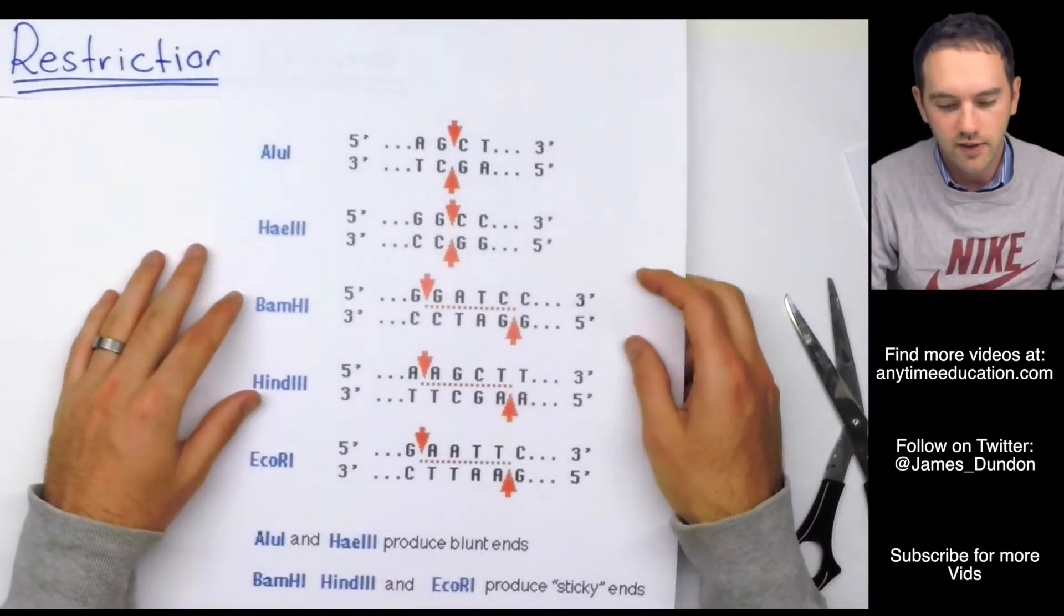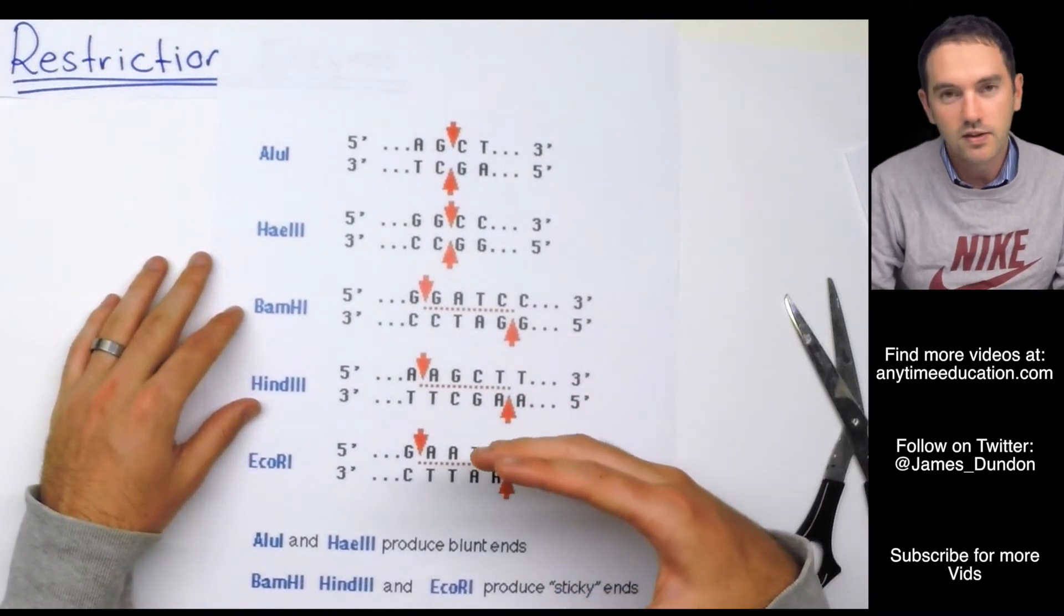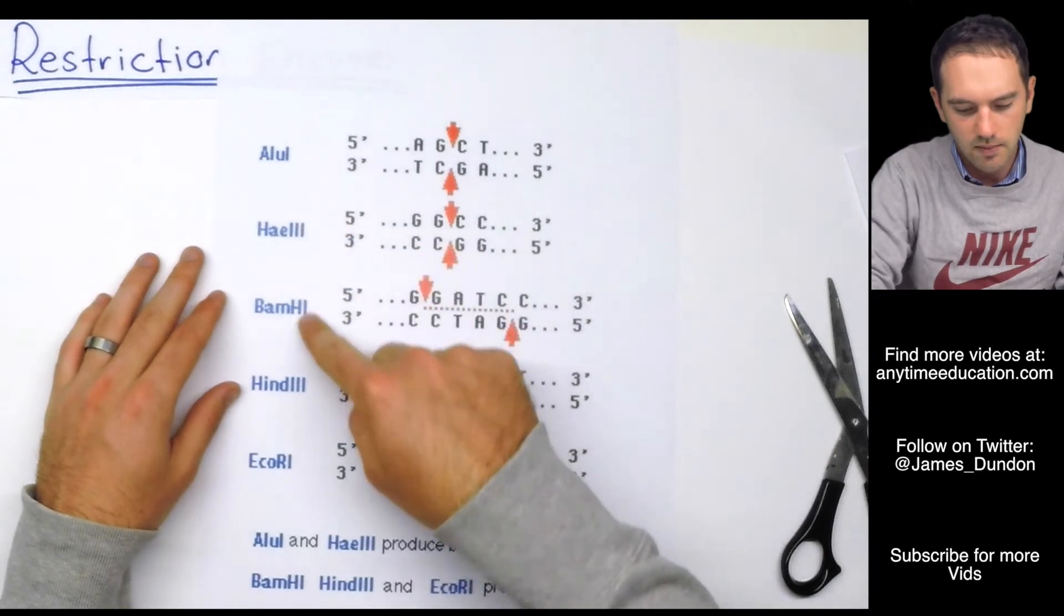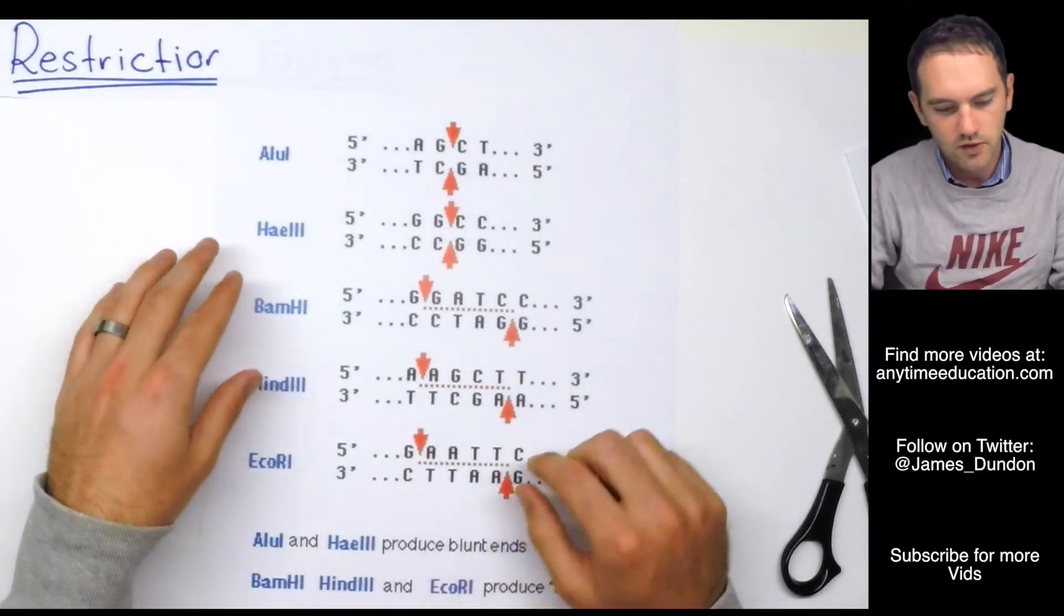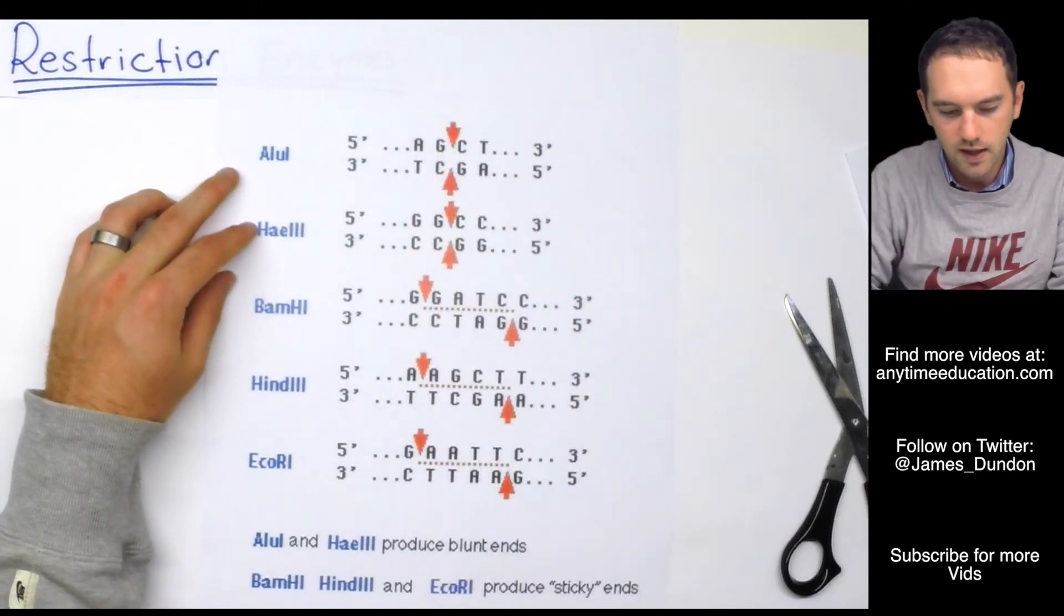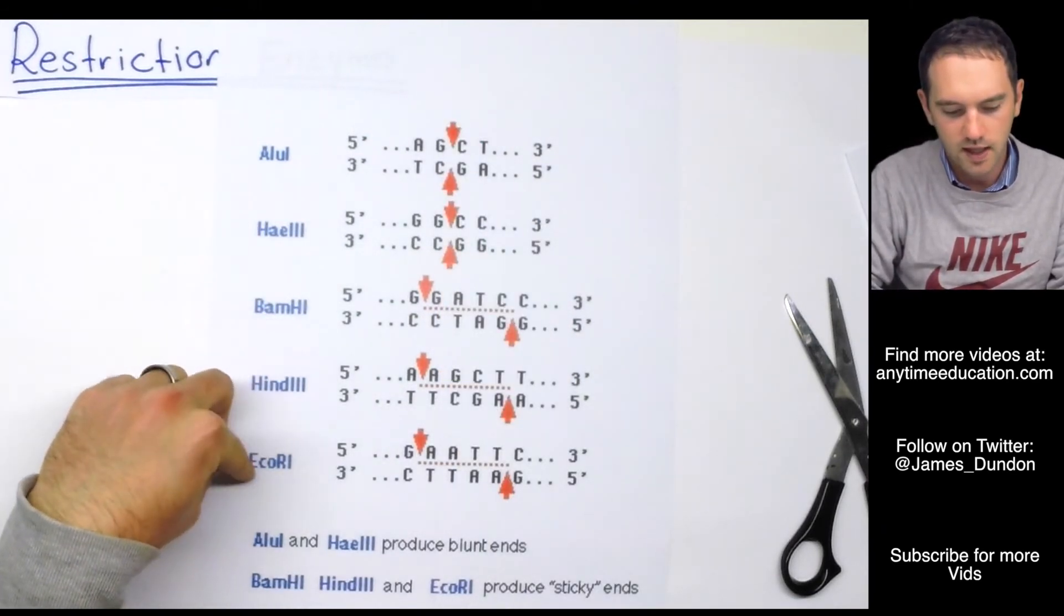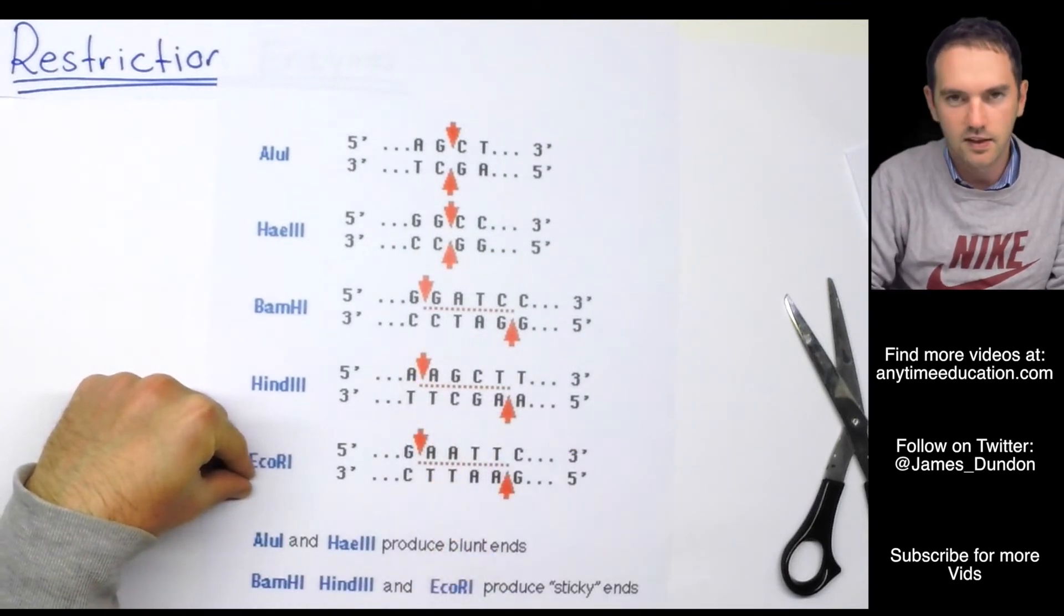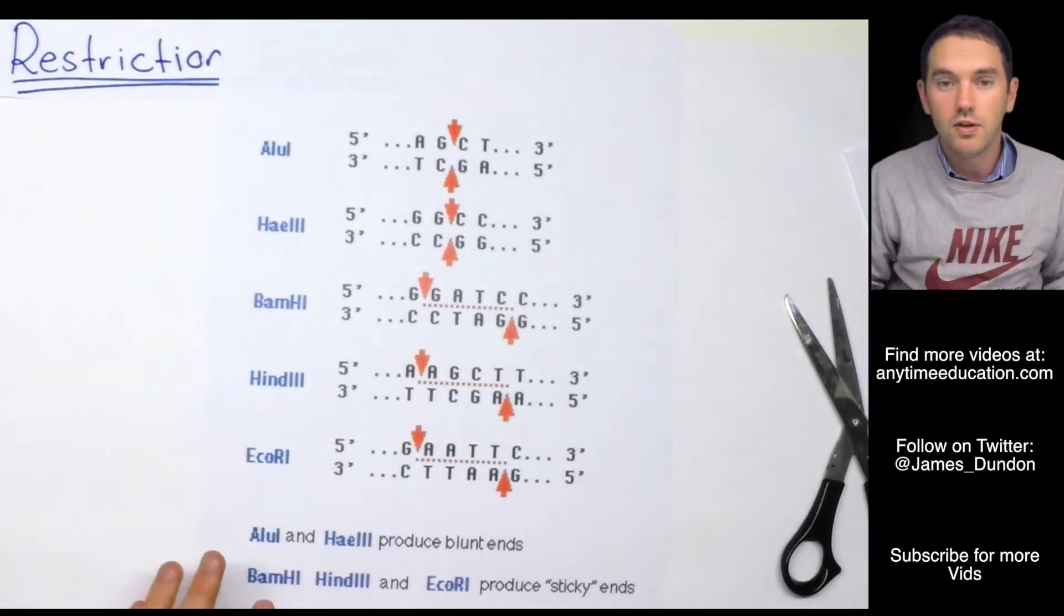Now scientists actually found out that there's bacteria that produce lots of these restriction enzymes. And these are some of the more common ones. So you'll see this one and this one both create these blunt ends. The BANH1, the HIN3 and the ECO-R1, very common, all produce these sticky ends. So how might we use them?